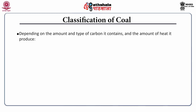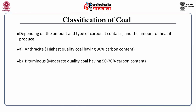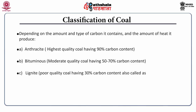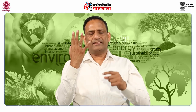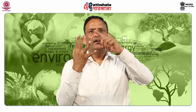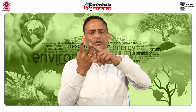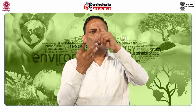Depending on the amount and type of carbon and the heat produced, coal is divided into different categories. First is anthracite coal — the highest quality, having 90 percent carbon content. Second is bituminous coal — moderate quality, having 50 to 70 percent carbon content. Third is lignite coal — poor quality, having 30 percent carbon content, sometimes called brown coal. Fourth is peat, the first stage of coal formation, with a very low carbon content of only 5 to 10 percent.